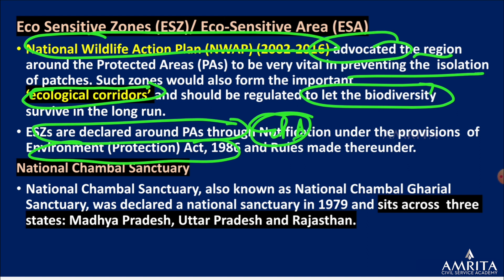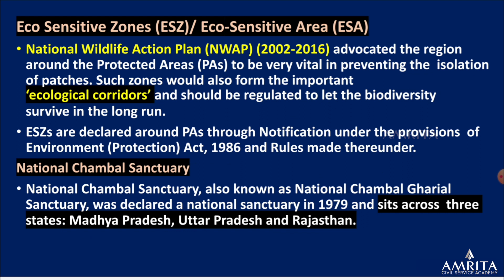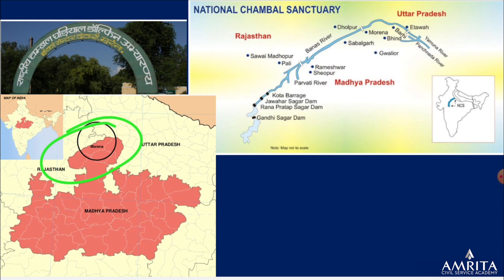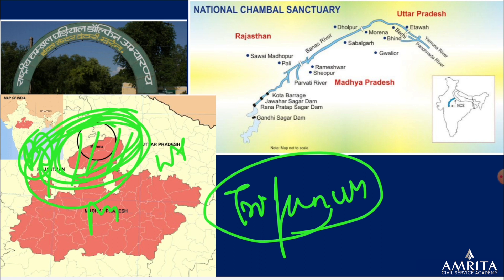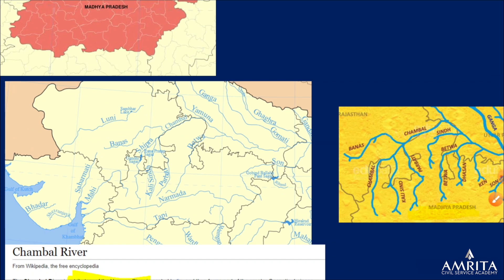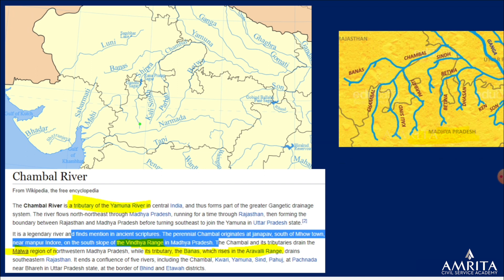National Chambal Sanctuary is also known as the National Chambal Gharial Sanctuary. It spreads across three states: Madhya Pradesh, Uttar Pradesh, and Rajasthan. This tri-junction also historically explains poor governance and the presence of dacoits in Chambal ravines. The Chambal River originates from the southern slope of the Vindhyas. Gandhi Sagar Dam is along the Chambal River. It finally joins the Yamuna.